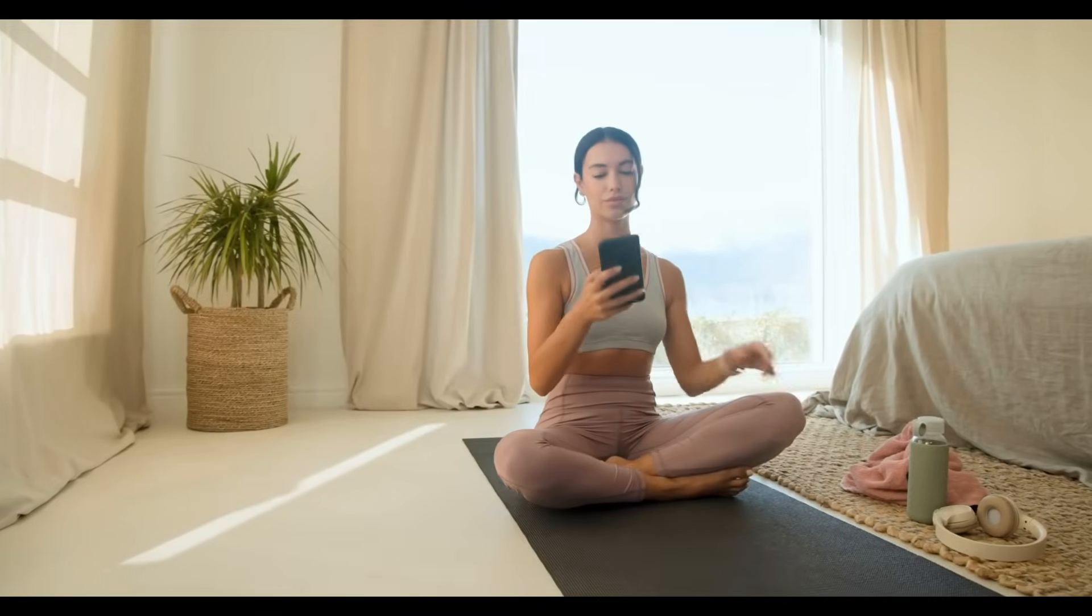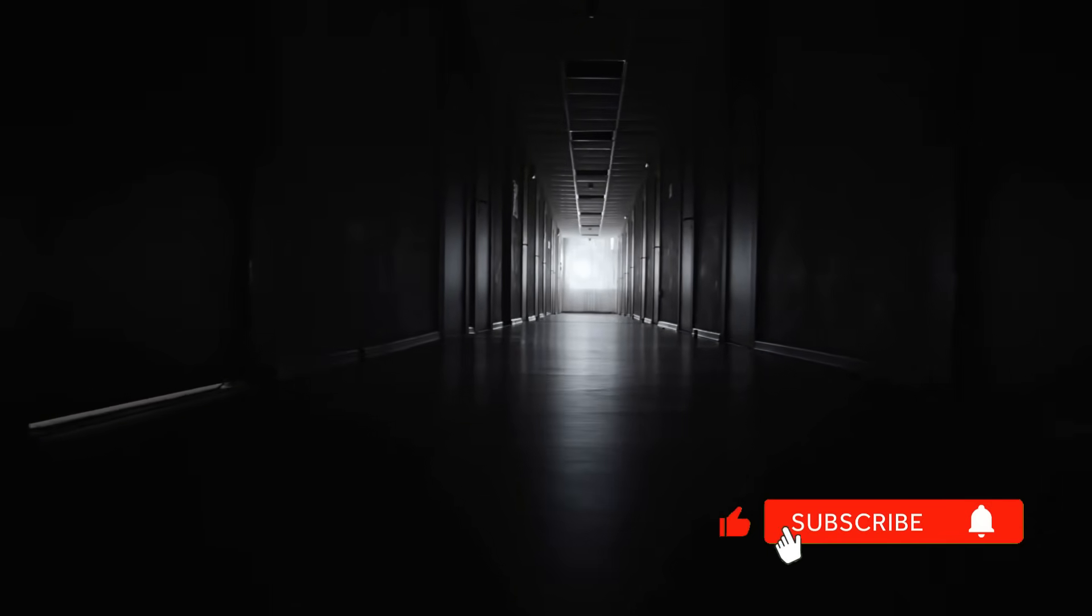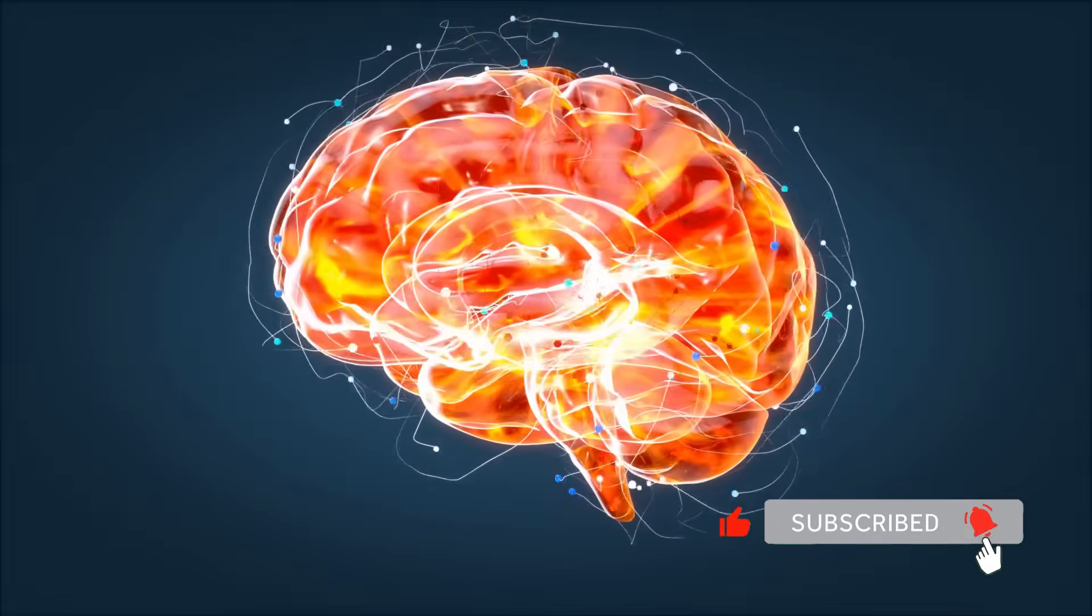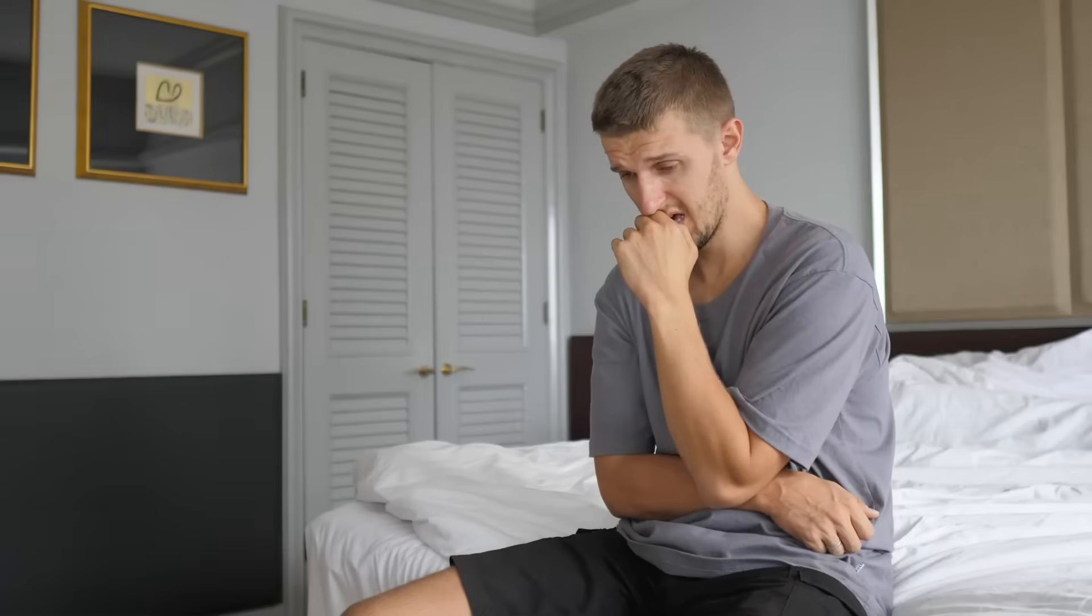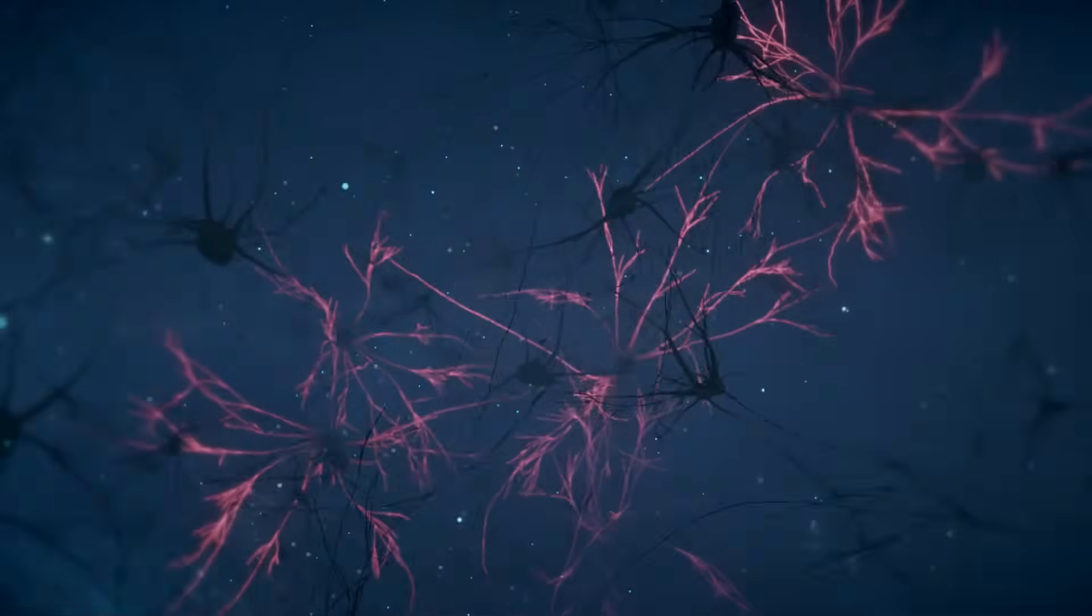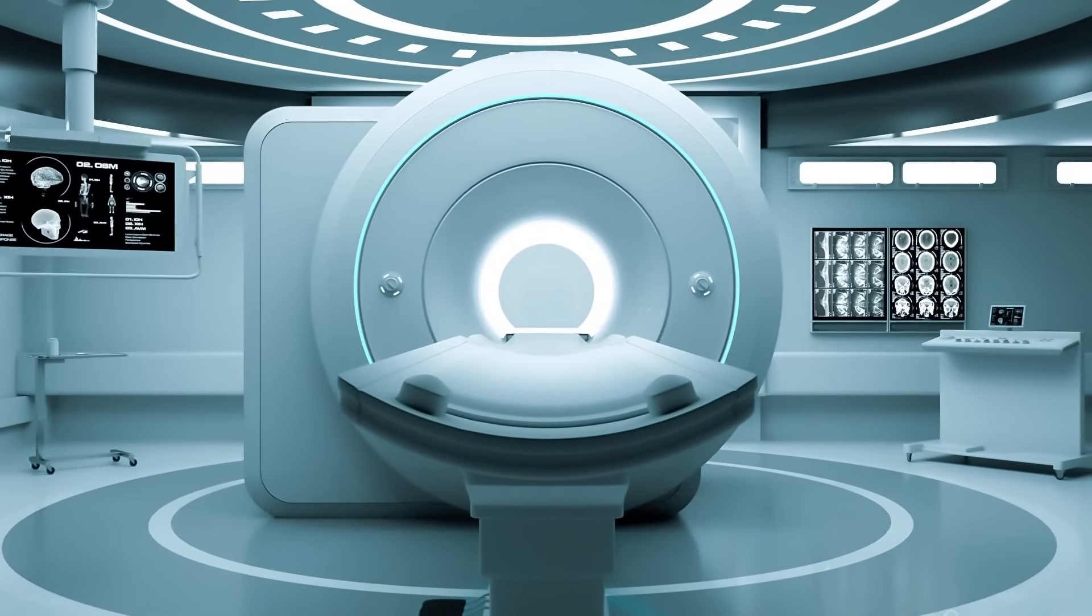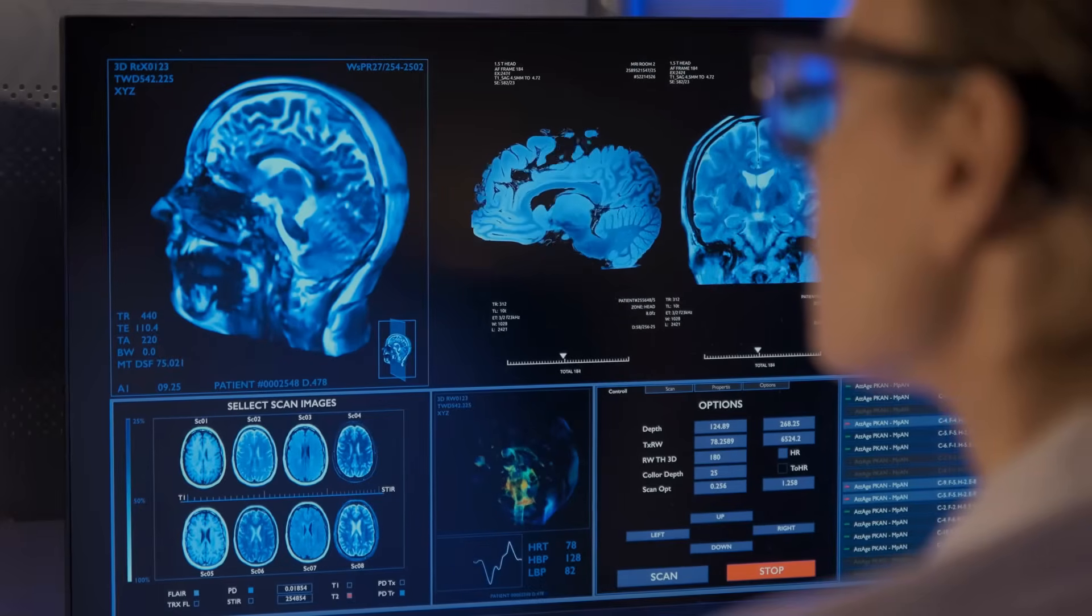People convince themselves they need a gym membership, a meditation app, the perfect morning routine with 17 steps. Meanwhile, five minutes of backward walking in your hallway delivers immediate cognitive boost. You're overthinking instead of acting. Trap number three. If I can't see instant results, it's not working. Brain changes aren't as visible as lifting weights. You don't see your neurons firing. But fMRI scans prove the changes happen in real time. Your brain is rewiring as you move.